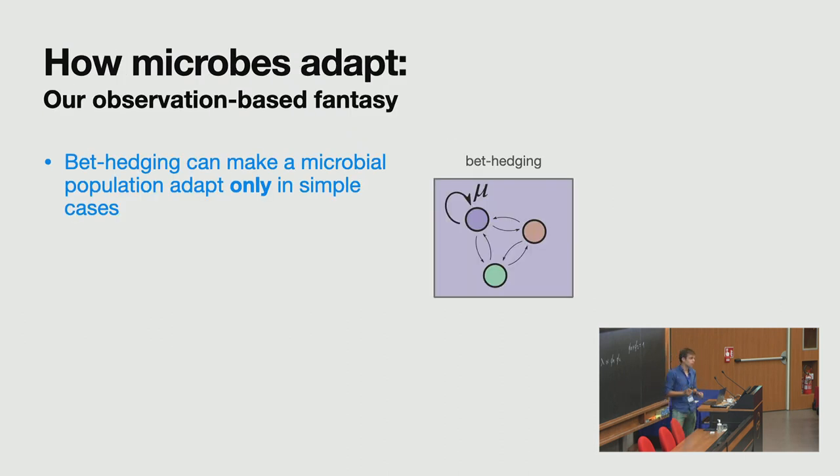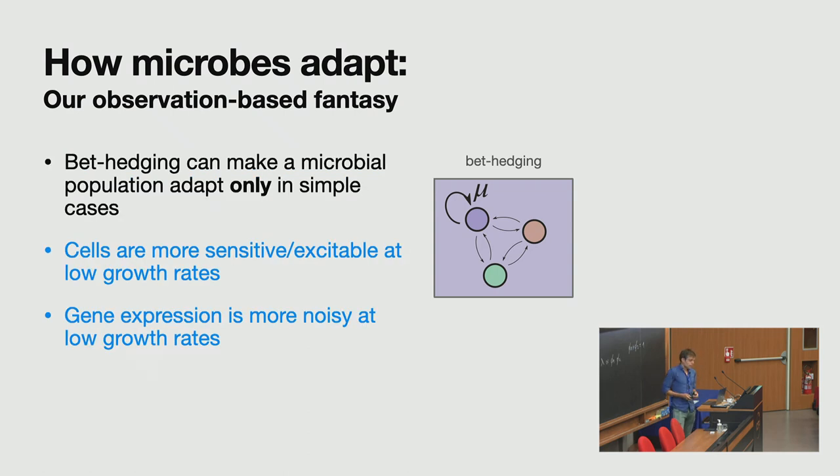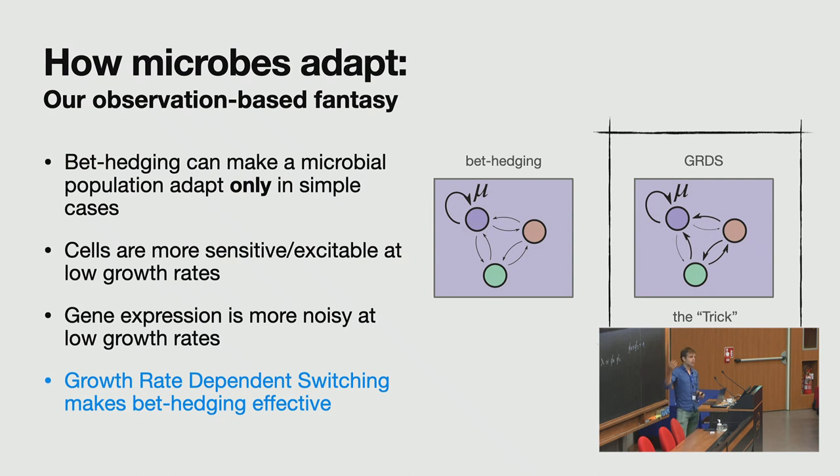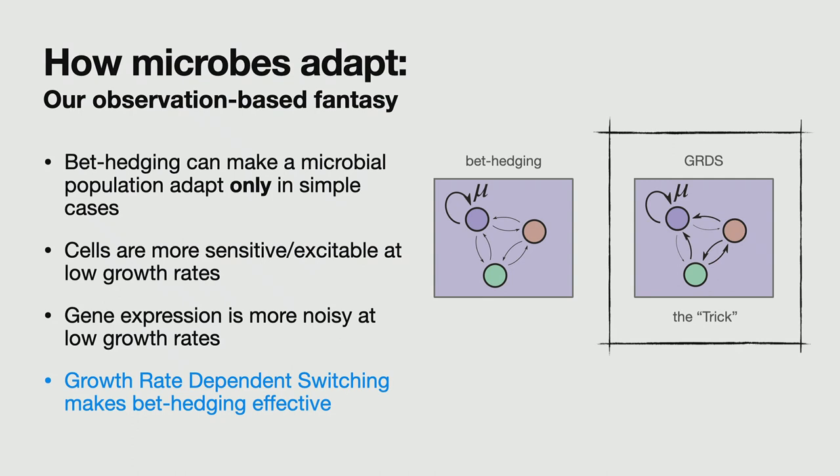So just quickly summarizing before I go to my last two slides. We found that bet hedging can make a microbial population adapt. But only in very simple scenarios that were not really describing the nature in my view. But then adding the observations that cells become more sensitive to fluctuations and get more fluctuations at low growth rates, this brings you to growth rate dependence stability. And we saw that this can really make populations much more effective in adapting. But there's, of course, a problem. Like I said, we should also at some point get out of our theoretical bubble and look a bit more. So are our predictions correct?